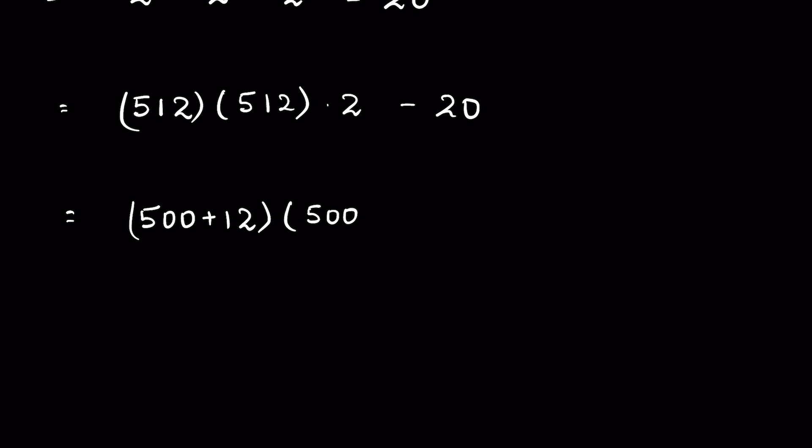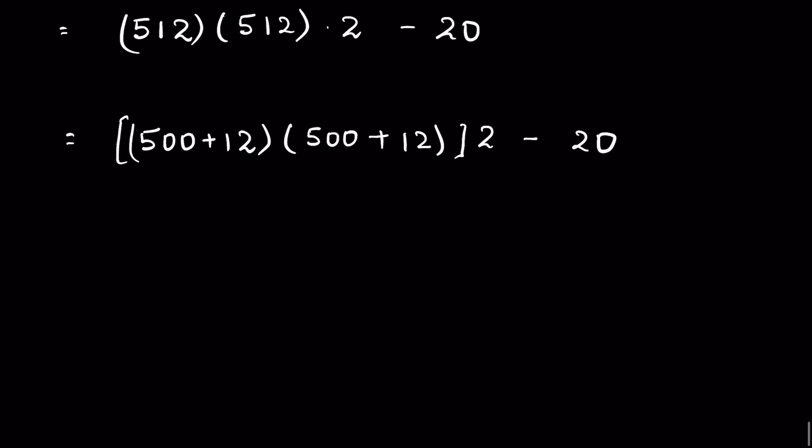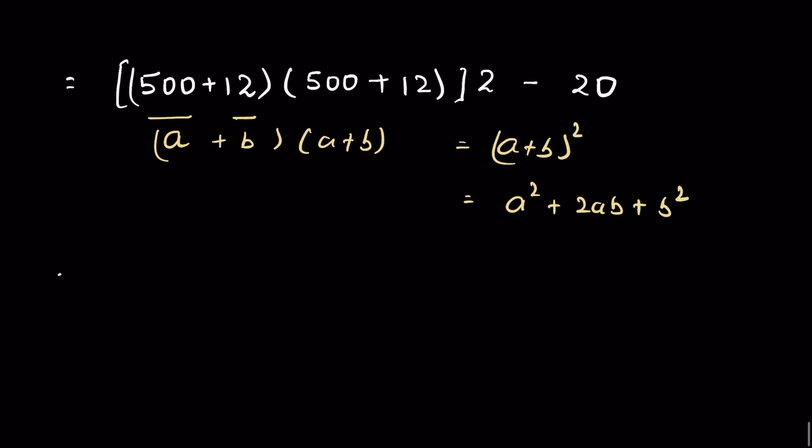If 500 is a and 12 is b, then it is in the form of a plus b times a plus b, and this is equal to a plus b whole square. Therefore we can expand as a square plus 2ab plus b square. So let's write it as 500 square plus 2 times 500 times 12 plus 12 square, then times 2 minus 20.